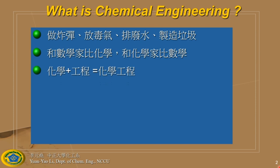The first option: you can make a lot of fantastic chemicals. The second option: your math is better than a chemist, but your chemistry is better than a mathematician. The third option: chemical engineering is the combination of chemistry and engineering, which is why it's called chemical engineering. Which one is the best option?